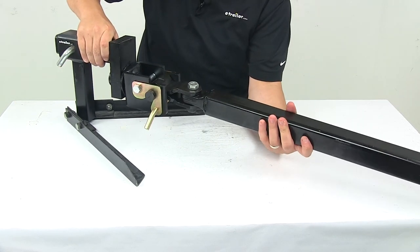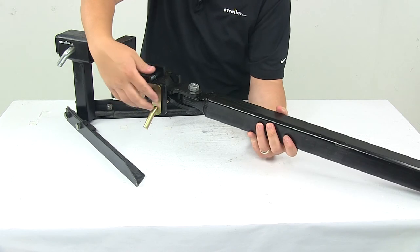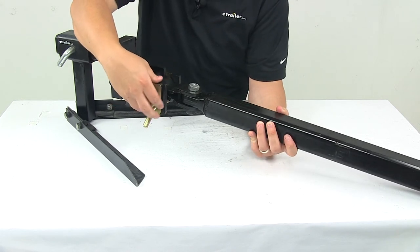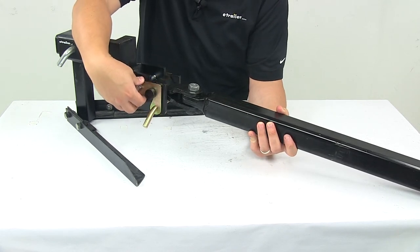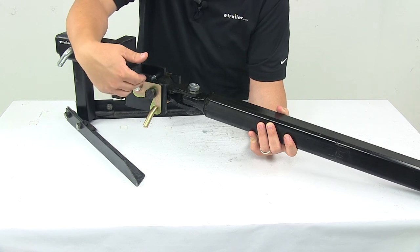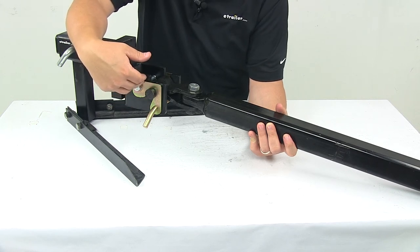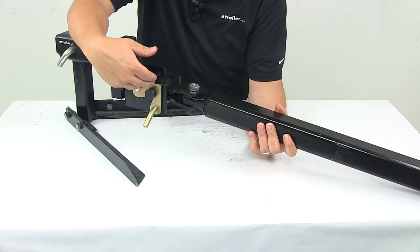Now when coupling, the latch plates, which are these right here, they lock in place for a secure connection. Also they offer visible connection points to eliminate any question as to whether the trailer is hitched correctly or not.